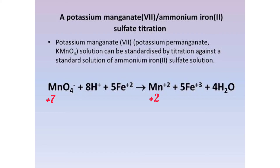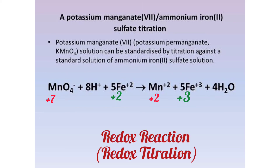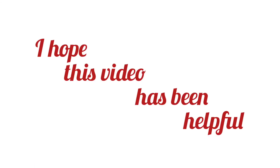Iron(II) (Fe²⁺) in the reactant side is in the +2 oxidation state, whereas on the product side it is in the +3 oxidation state, which indicates that it has undergone oxidation. The end point is said to be reached — that is, the faint pink color persists — only when all the iron has been oxidized. I hope this video has been helpful to all students performing redox titration. Thank you for watching.